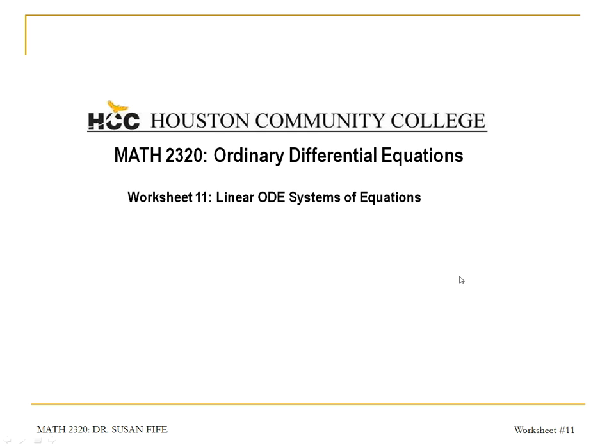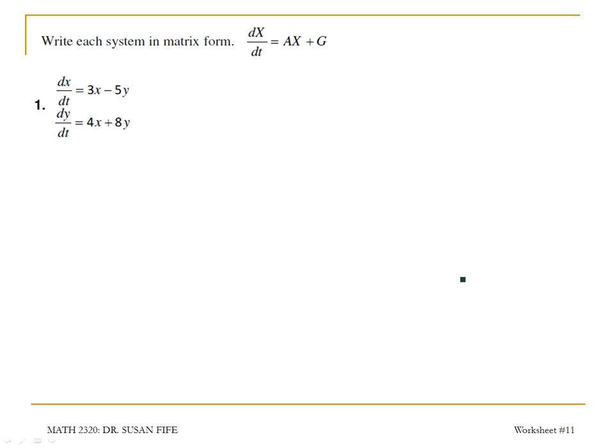We're going to start by writing systems in matrix form. To write a system in matrix form, you want the derivative terms on the left side, and you want these x terms and the y terms to be lined up. So we're going to define a matrix X to be the matrix that consists of all the variables x and y, so that my matrix X prime is going to be the derivative of x and the derivative of y, x prime and y prime. That's my dx/dt.